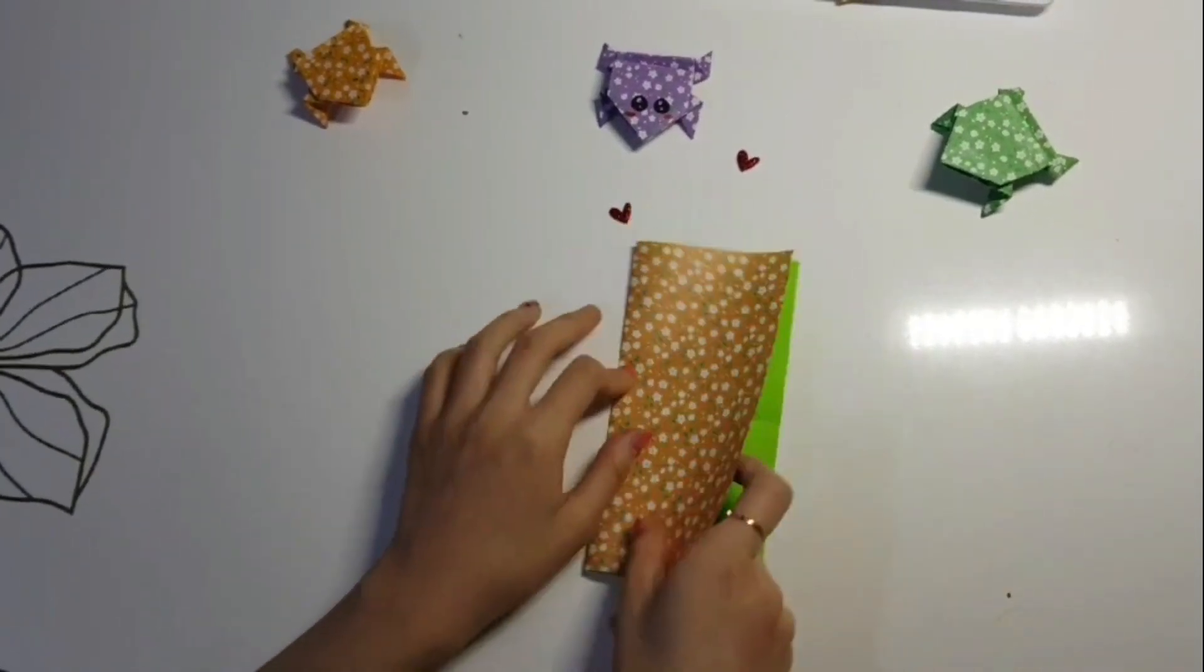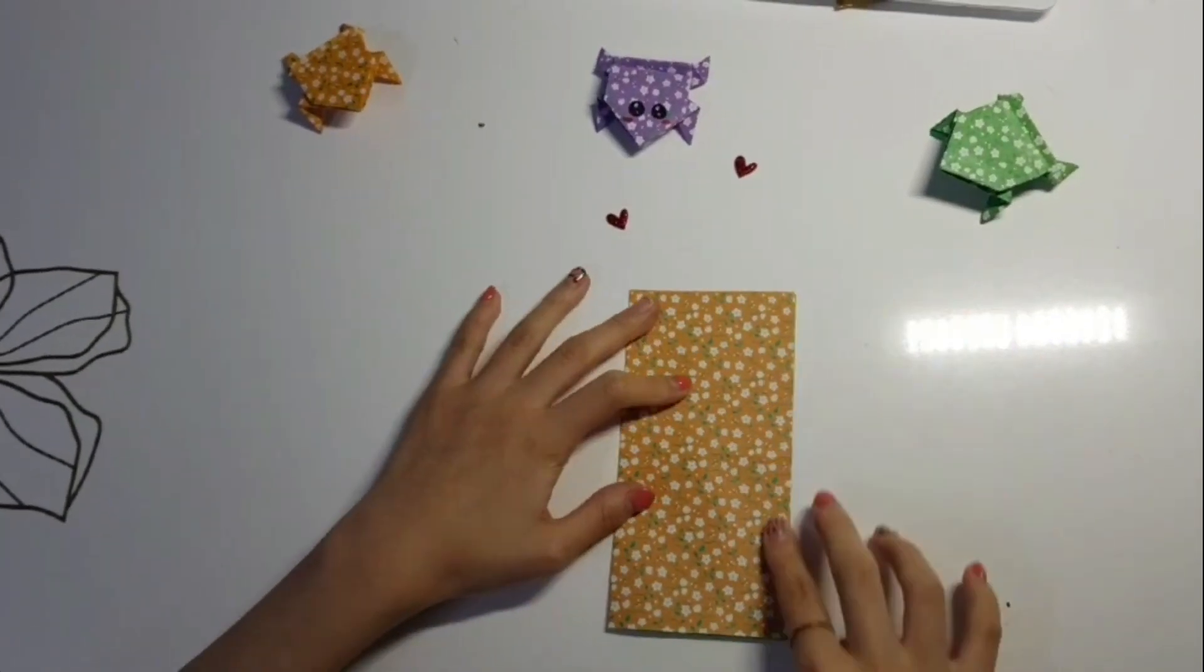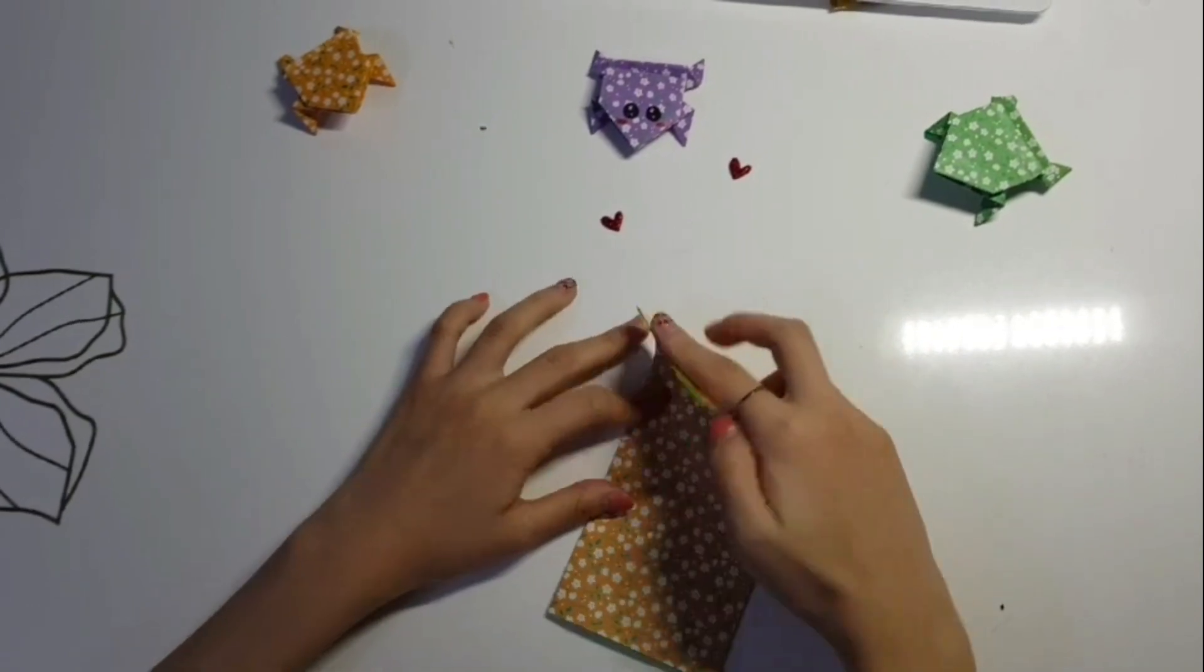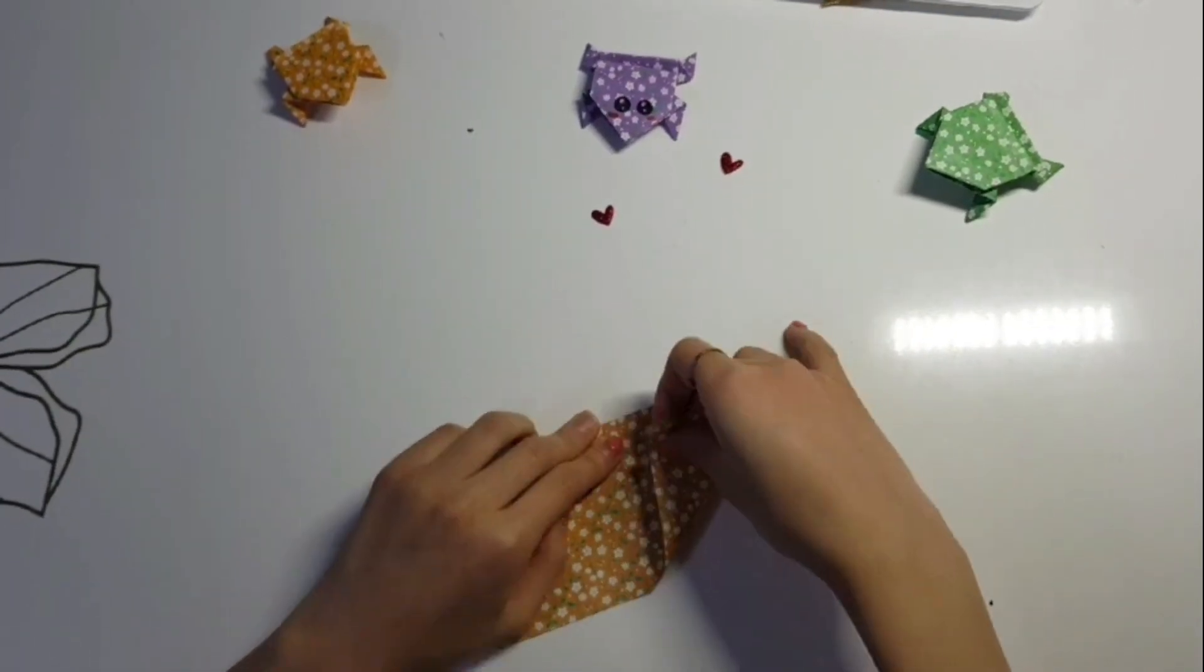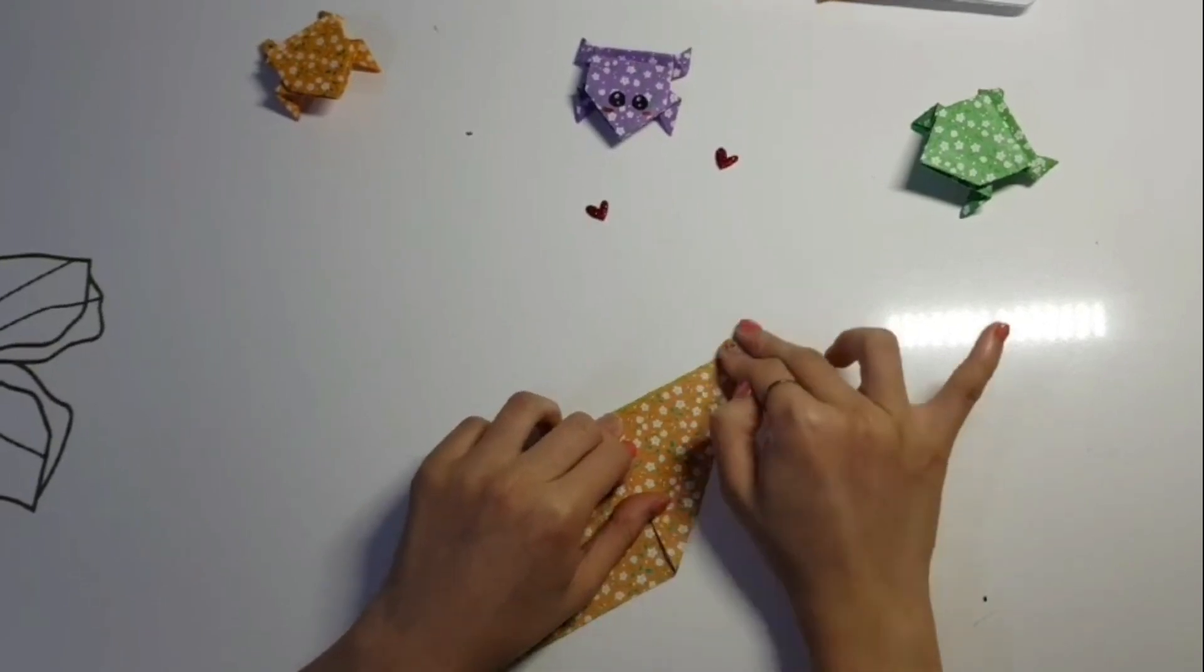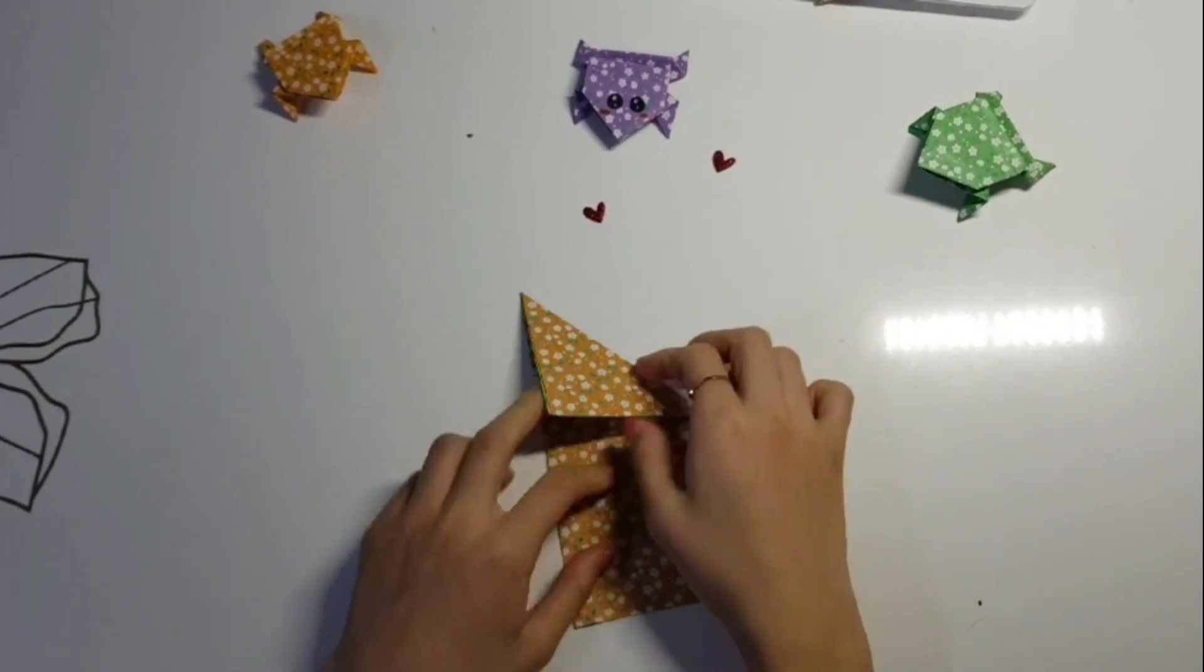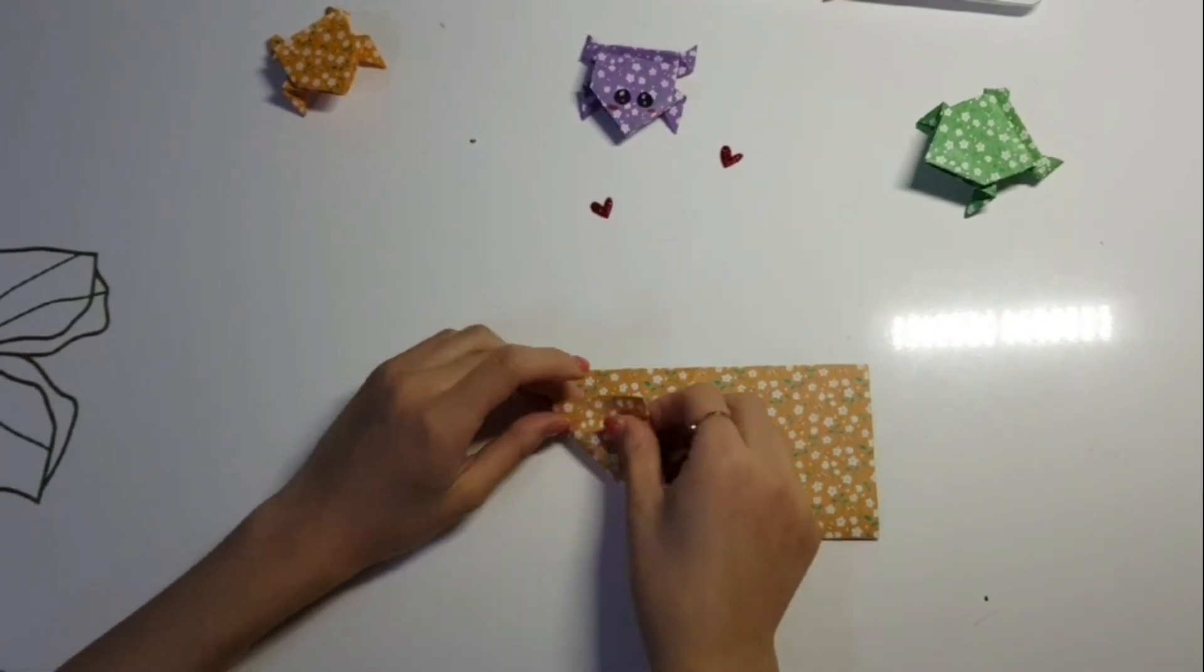Next, be sure to make the flaps be open on the right side and take the top right of both layers and fold it into the outer left side. Do the same thing for the other side.